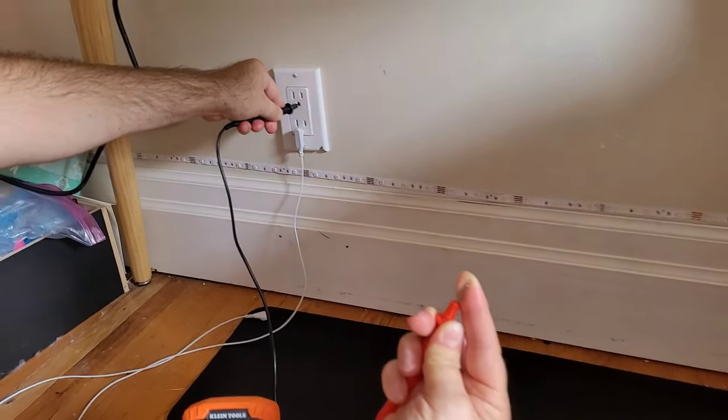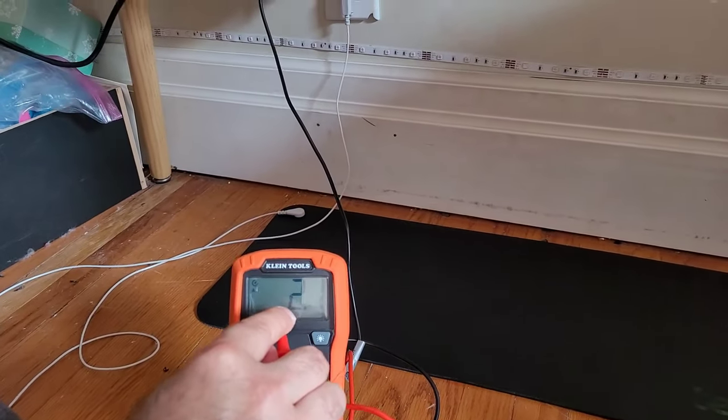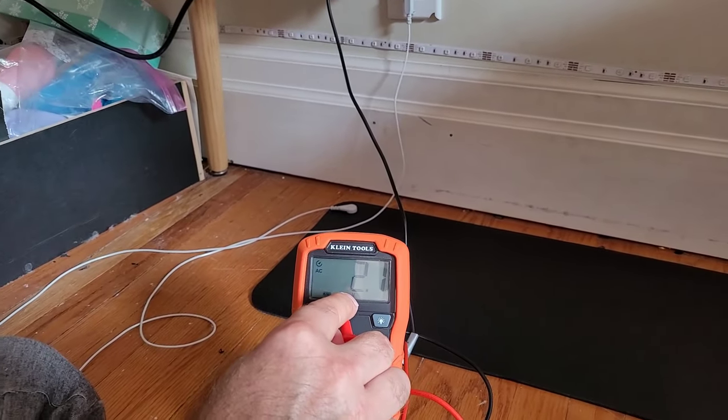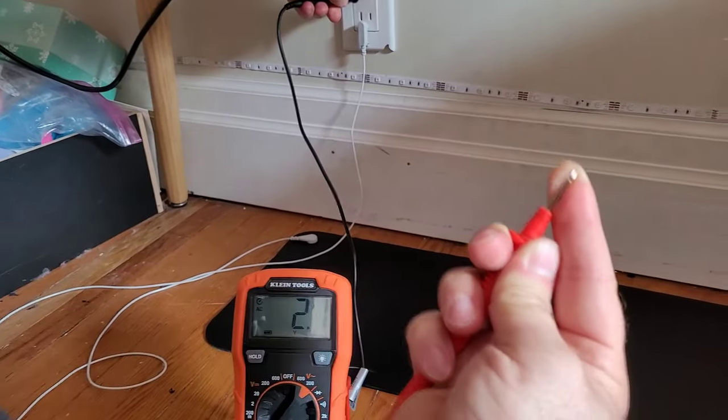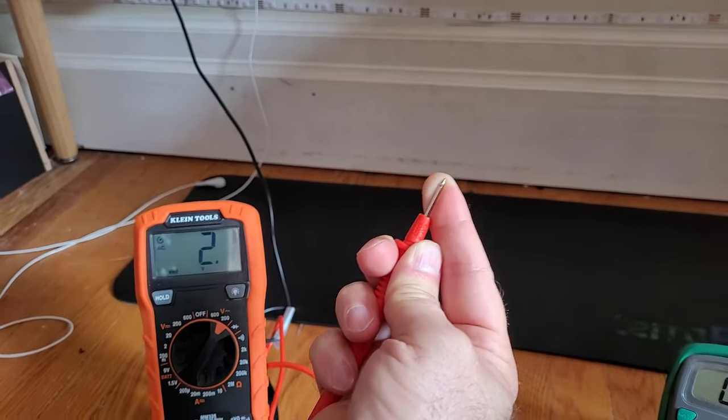I plug into the ground outlet, and now you can see my voltage is two, two volts. I have a voltage of two volts, 2.1 volts. That's my natural voltage.